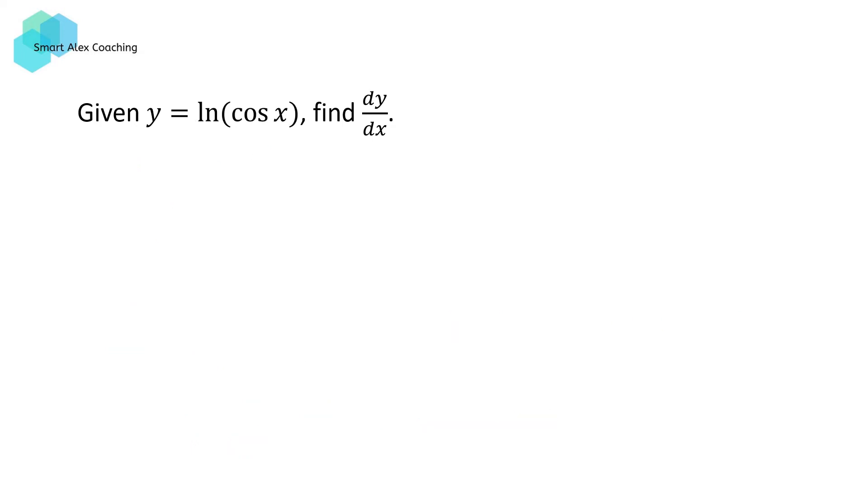Here's another example where we're working with logarithmic and trigonometric function. This time, we're going to let u equal cos x. This means that we can write y as the log of u. du/dx is going to be equal to negative sin x, whilst dy/du is going to be equal to 1/u. So dy/dx can be written as dy/du times du/dx, which is going to be 1/u times negative sin x.